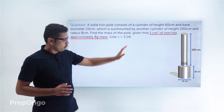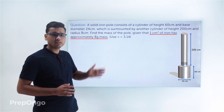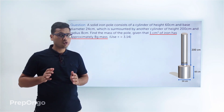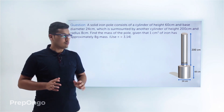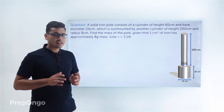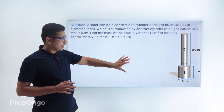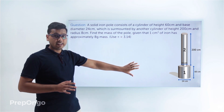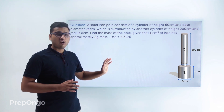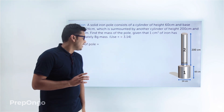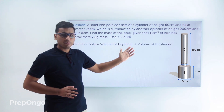If we calculate the volume of this whole iron pole and multiply it by the given mass density, we can find the total mass of this iron pole. The pole consists of two cylinders, so we can calculate the volume of each cylinder separately and add them up to get the total volume. Volume of pole = volume of first cylinder + volume of second cylinder.